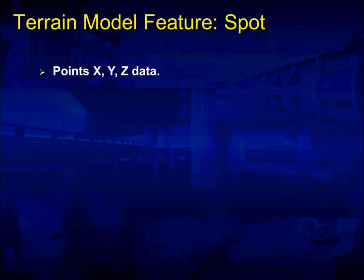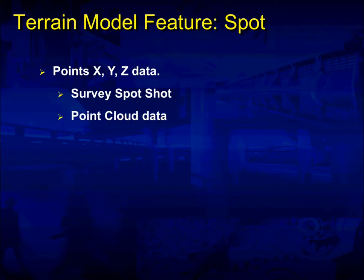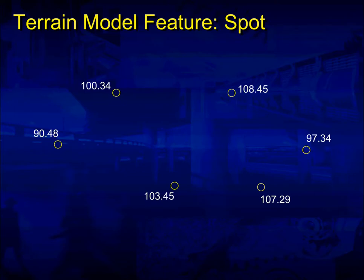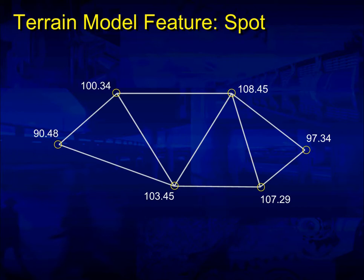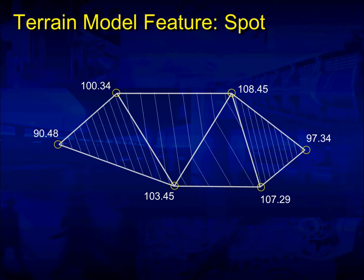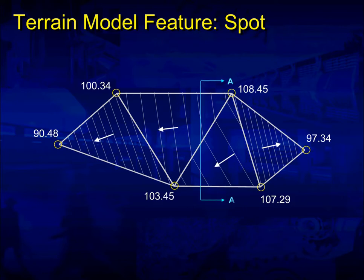Terrain model feature: spots. Typically a spot is just an XYZ piece of data — could be a survey spot shot, or a point cloud data point. We've got some spot shots here for an example. If I make a terrain model out of those spots, the triangulation would look something like this. If I apply the slope to them, you can see how the change of slope is different on each triangle face depending on the elevations of the points around it. If a drop of water would land on that triangle surface, you would see which way the rainwater would flow. And if I cut a section at AA, the section would look something like that.